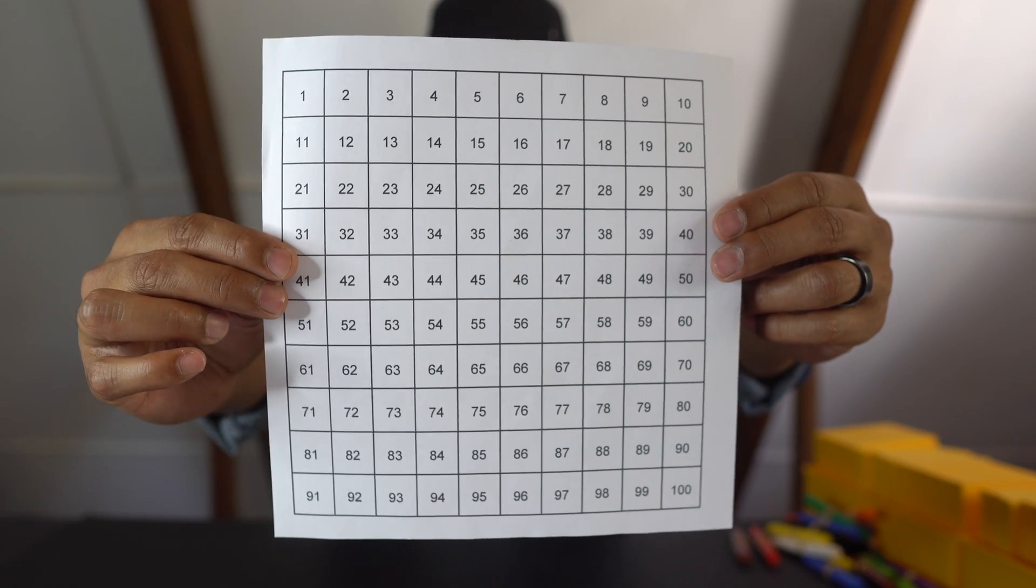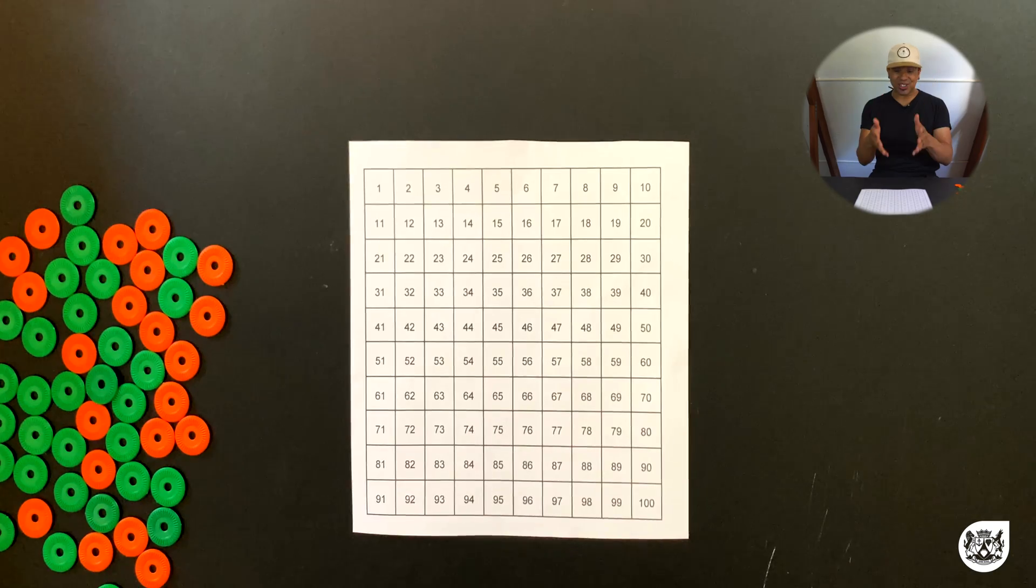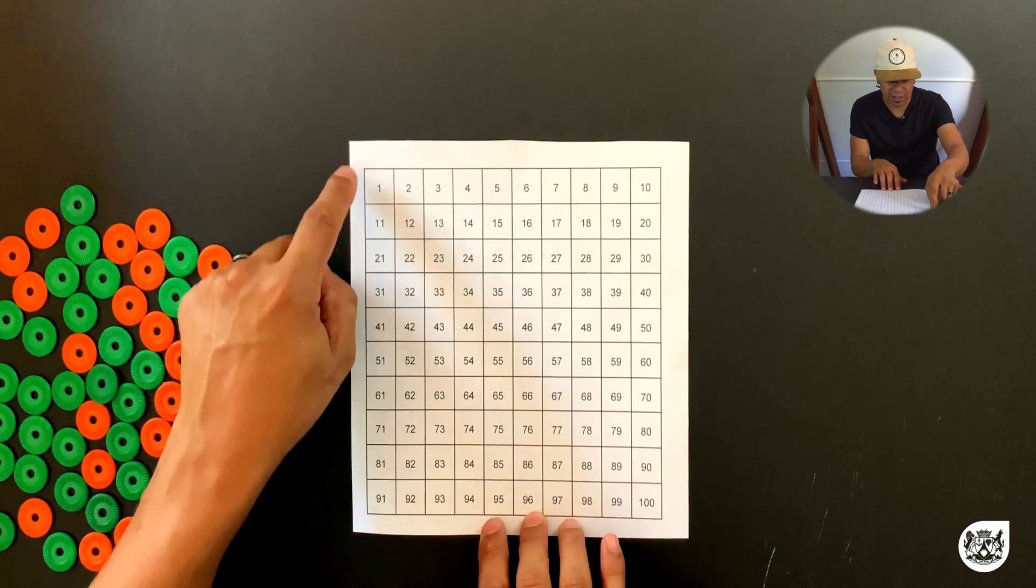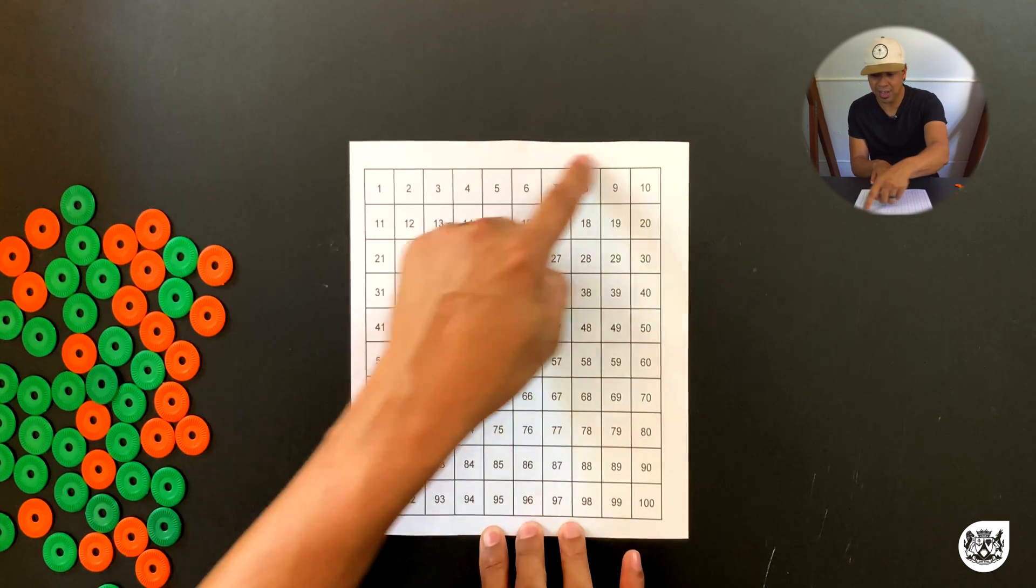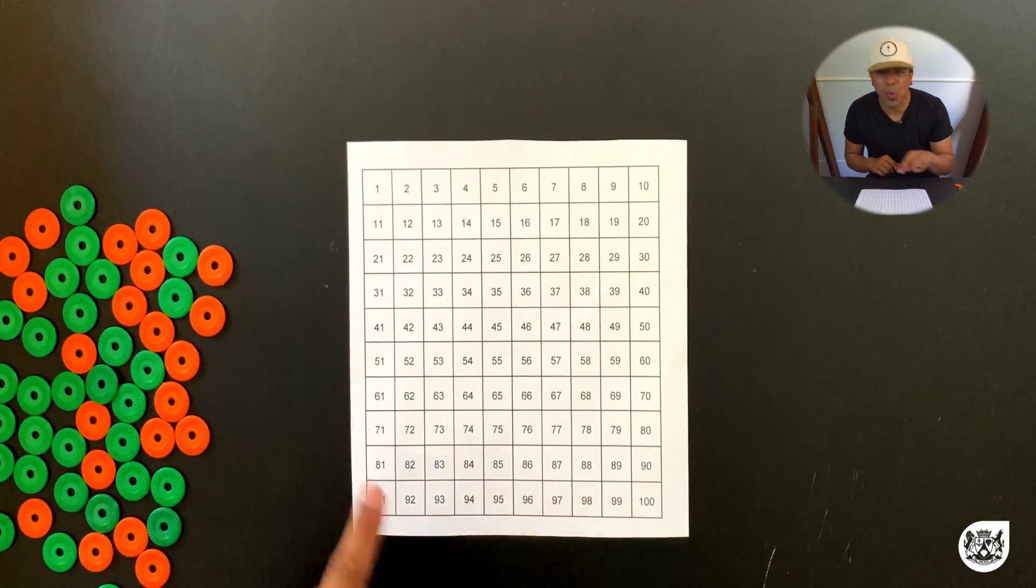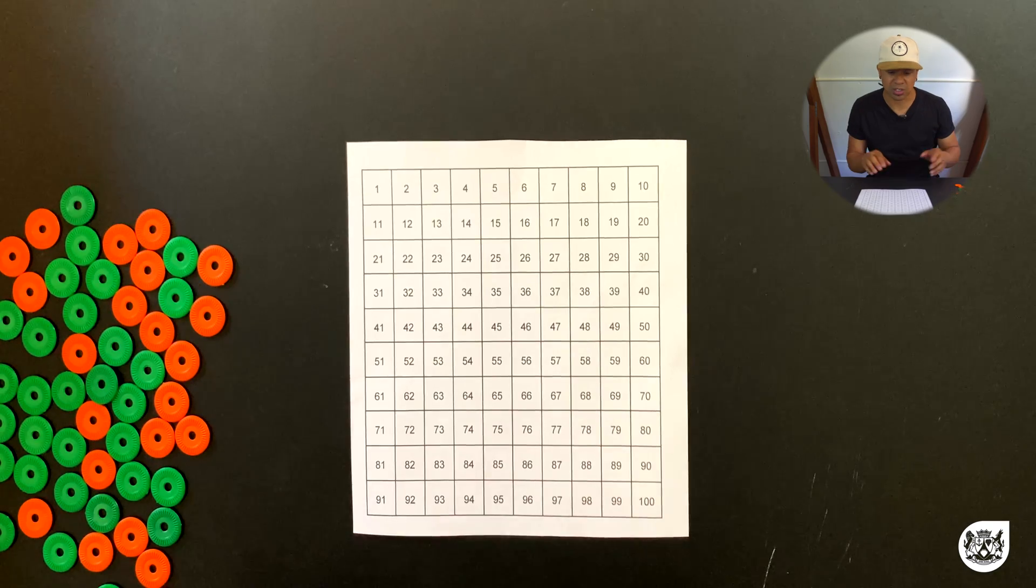For this lesson we'll be using a number grid which is also called a hundred chart. In front of us we have a number grid that goes to 100, and you'll see it's made up of ten rows and ten columns which goes from 1 all the way until 100. So let's see how this thing works.